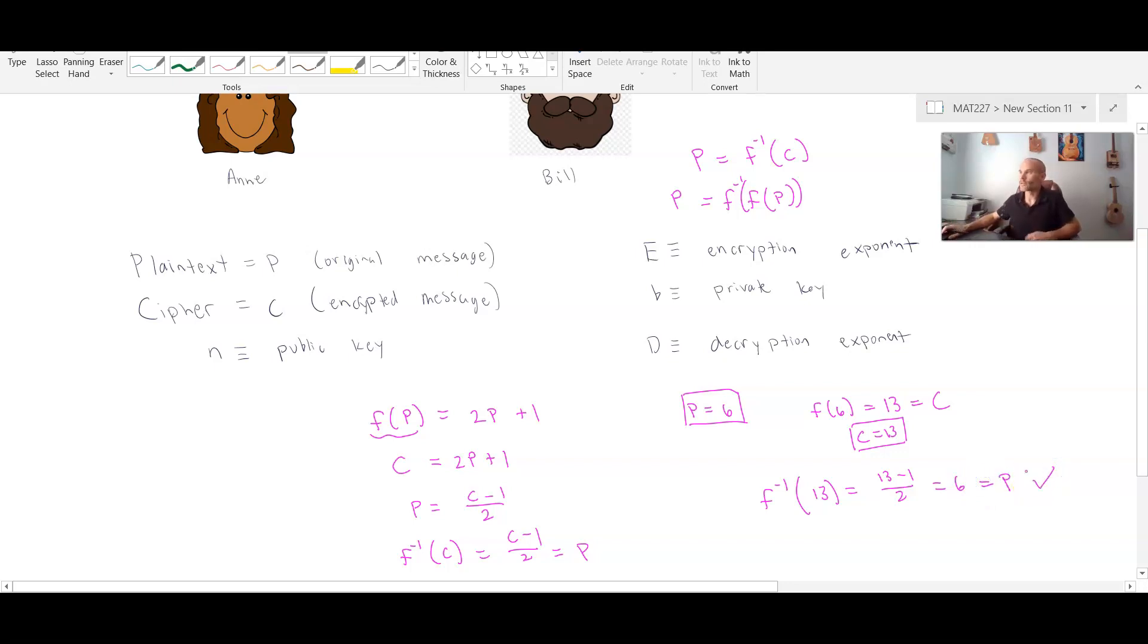So this encryption algorithm, that's really what it is. It's what we call a one-to-one function, meaning that for every input, there is a unique output. In other words, it would be very tricky if I took one message and each time I encrypted it, it became something different. It should always become the same encrypted message.